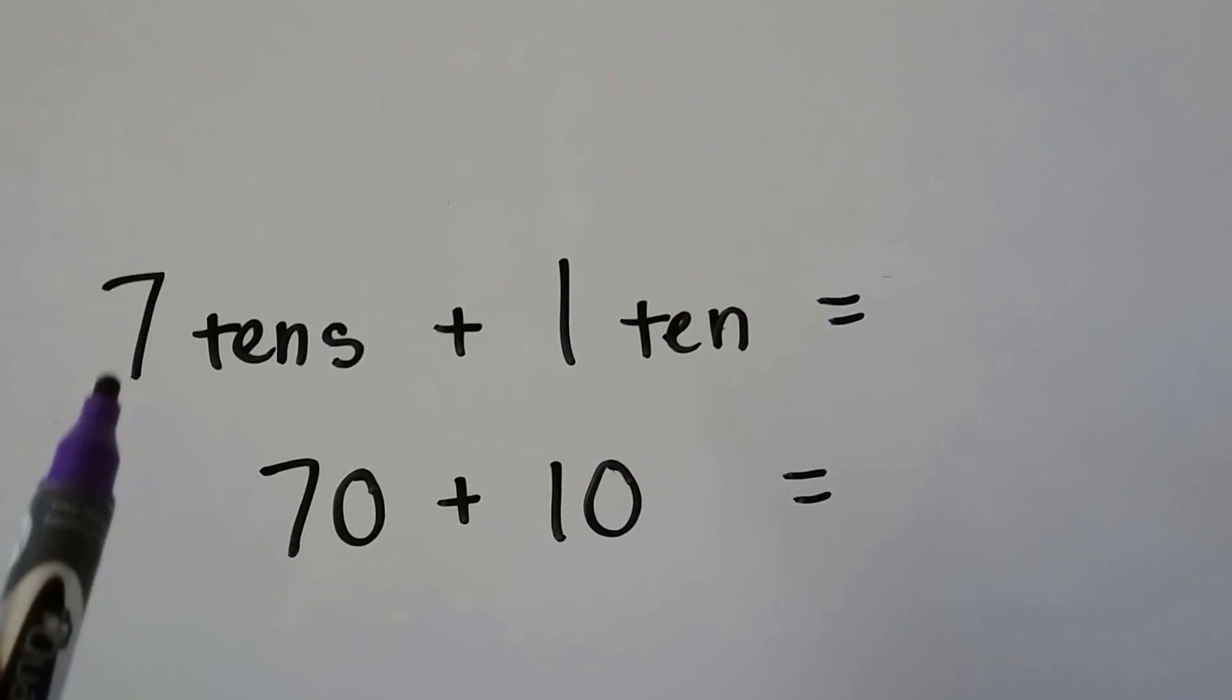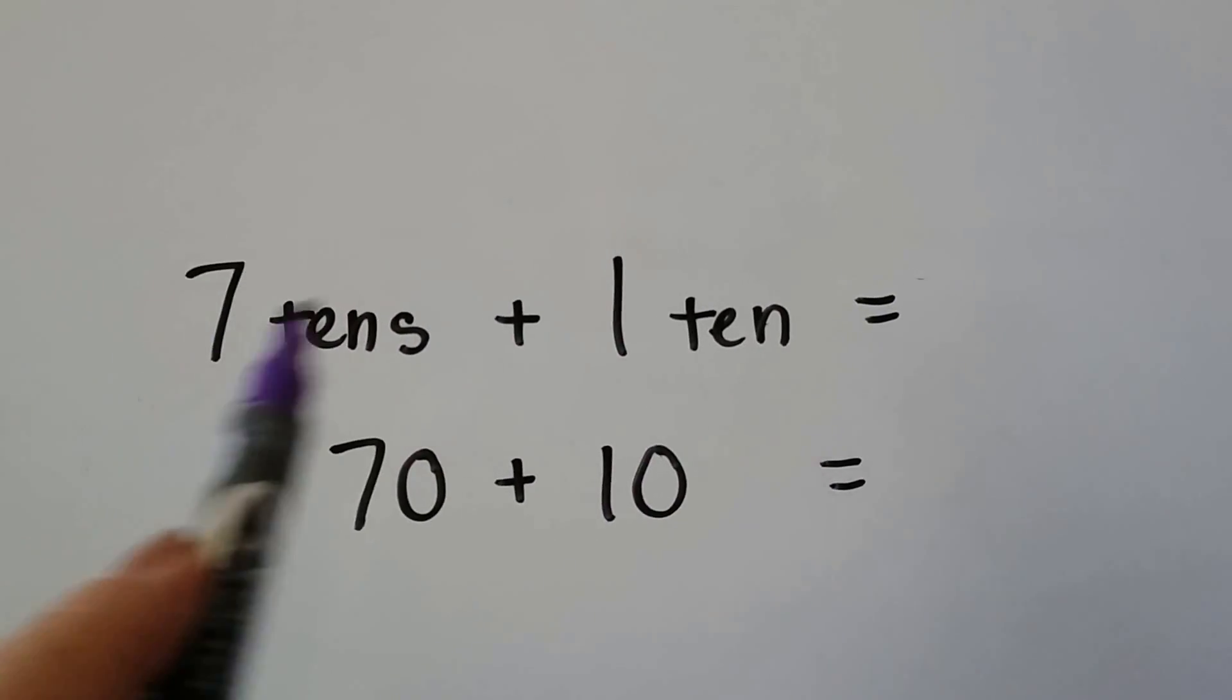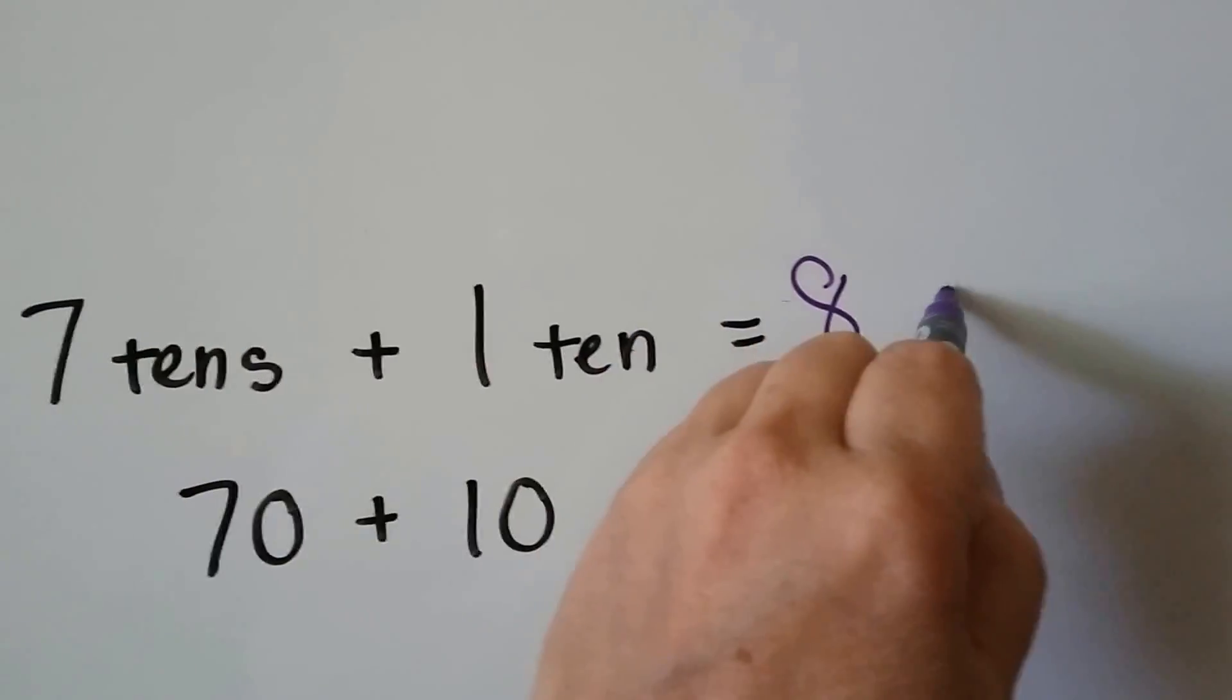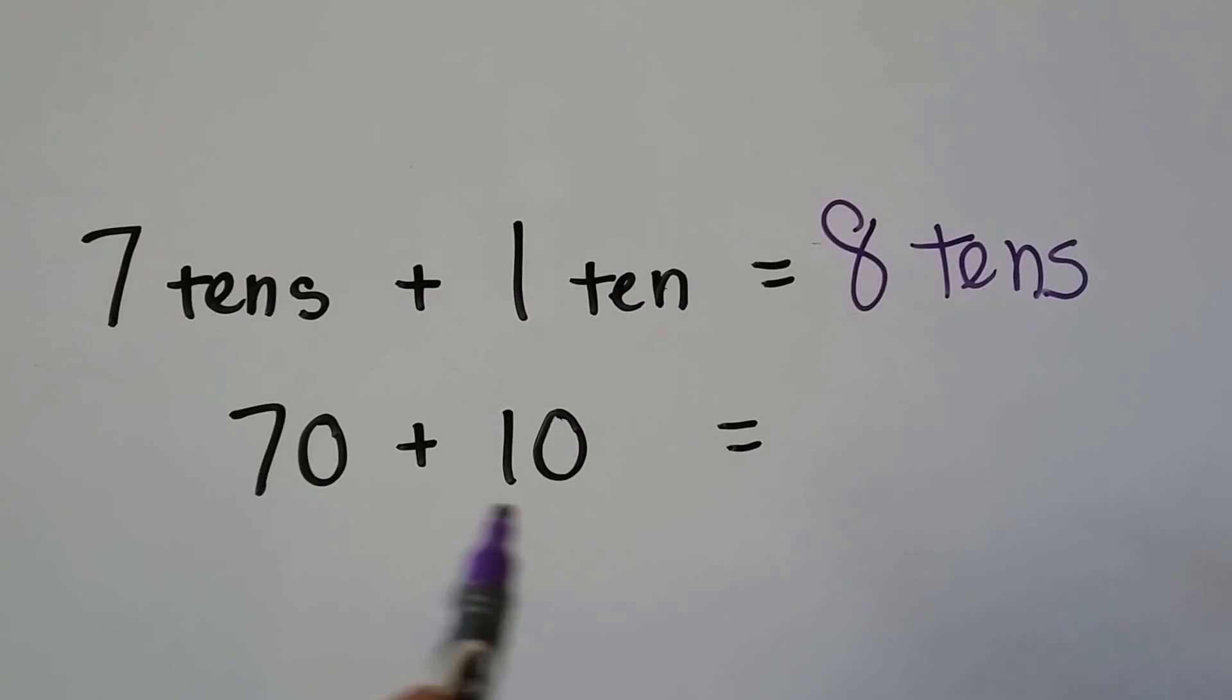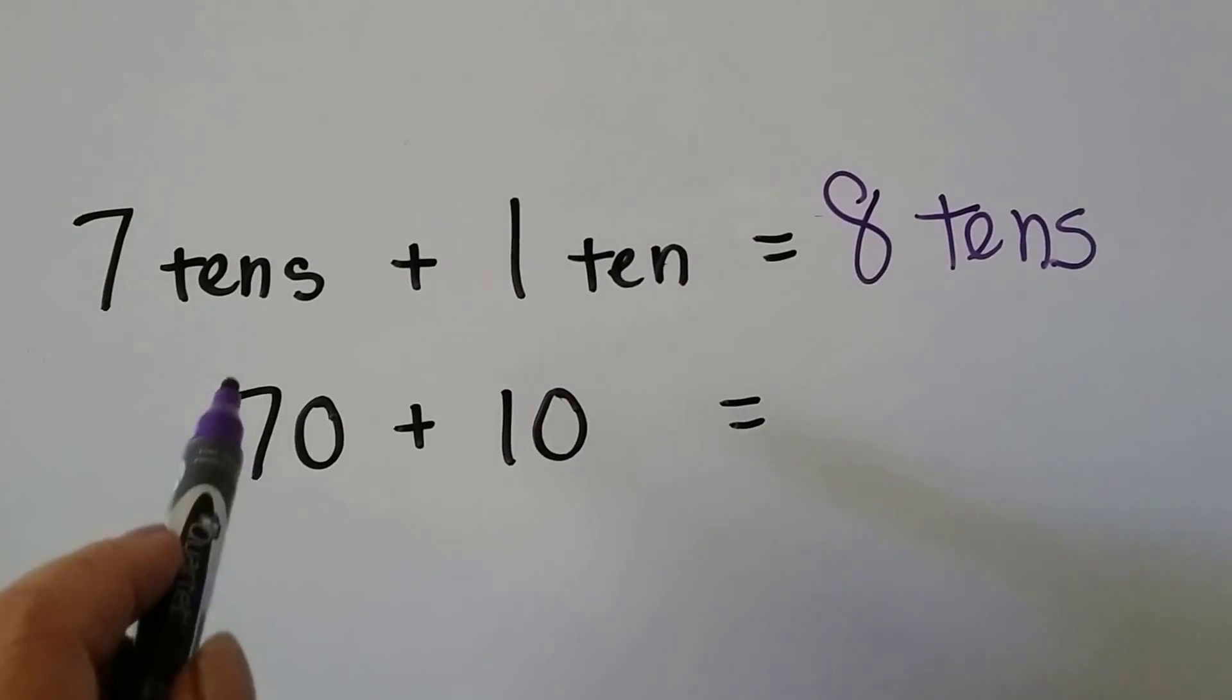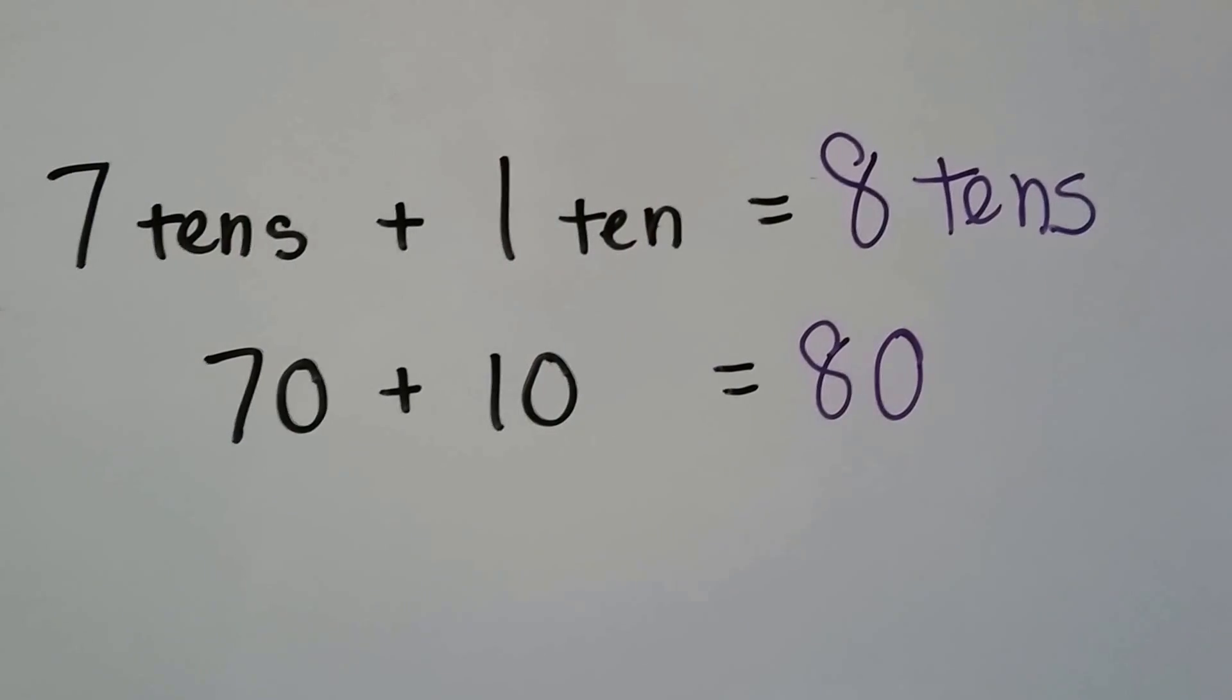Now we have seven tens plus one ten. Seven plus one. Seven plus one is eight, so we have eight tens again. Seventy plus ten is seven plus one with a zero, isn't it? That's eight for the tens place and zero for the ones place.